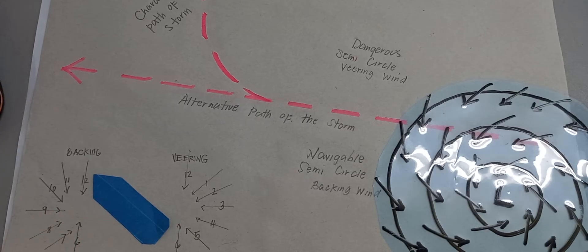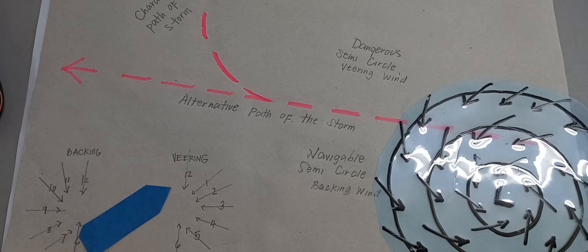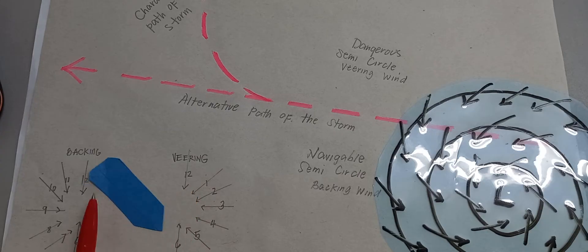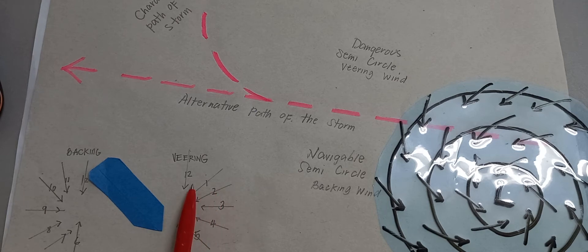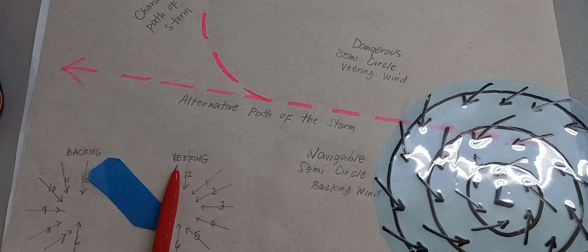So if you are in a navigable semicircle, you can observe that the wind is changing. Anywhere you are heading, it will hit you first coming from 12, then 1, 2, 3, and so on until 6. It is changing clockwise. That is what you need to remember — veering.